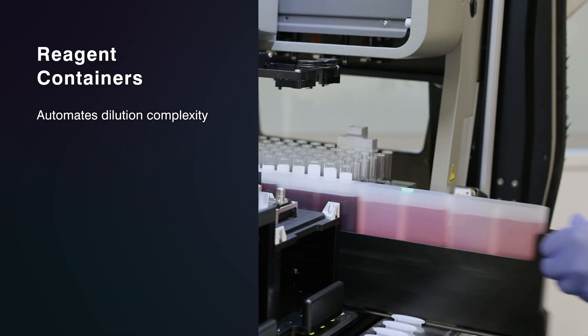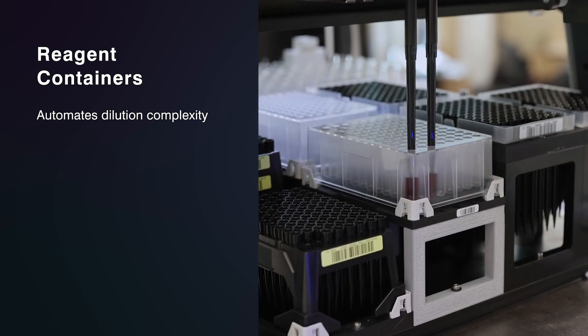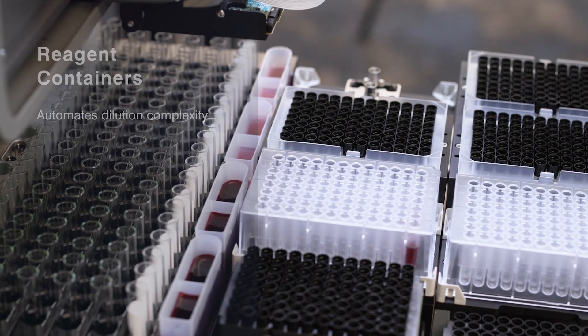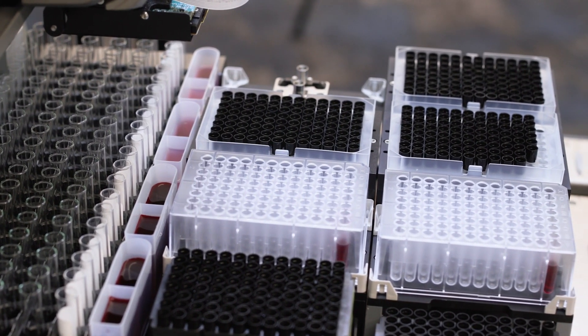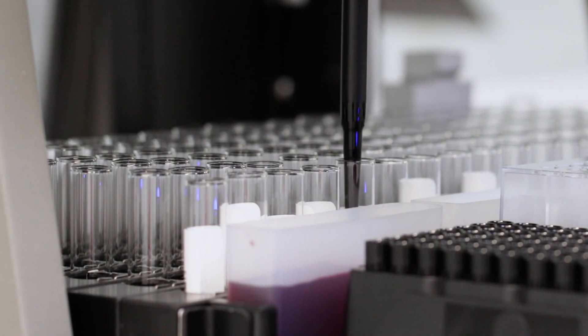Diluents are stored in 50 milliliter reagent containers. The system can make dilutions of up to 1 to 32,768 per sample. Each sample can have its own dilution factor and up to two diluents, allowing users to run multiple sample types and complex dilutions at the same time.